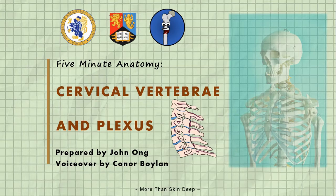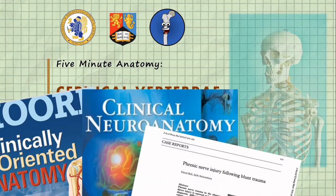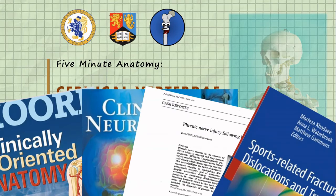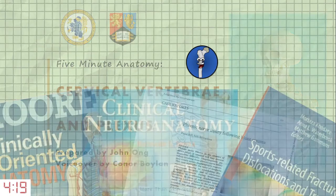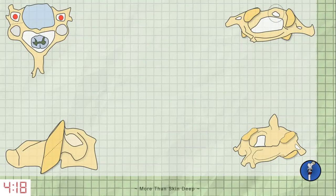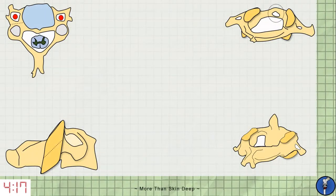Here are a few of the sources we've used for this video. Before we begin, we've previously made a tutorial that you should check out first. It covers the basic features of the cervical vertebrae and the unique qualities of the two uppermost vertebrae, the atlas and axis.